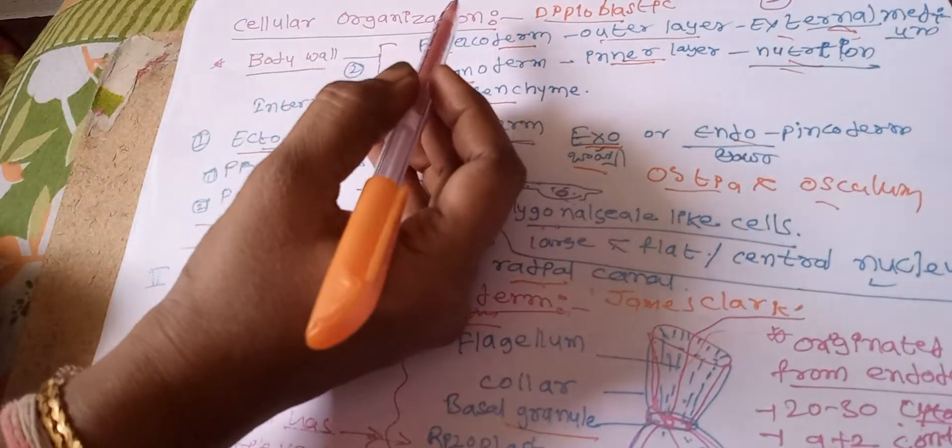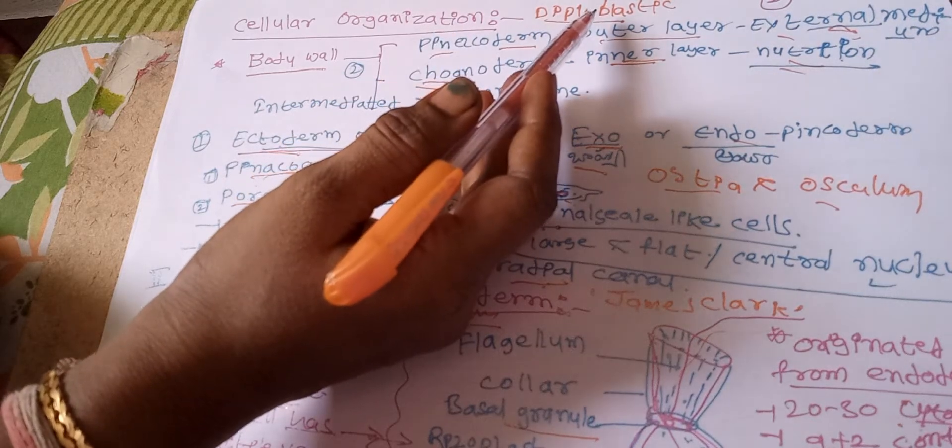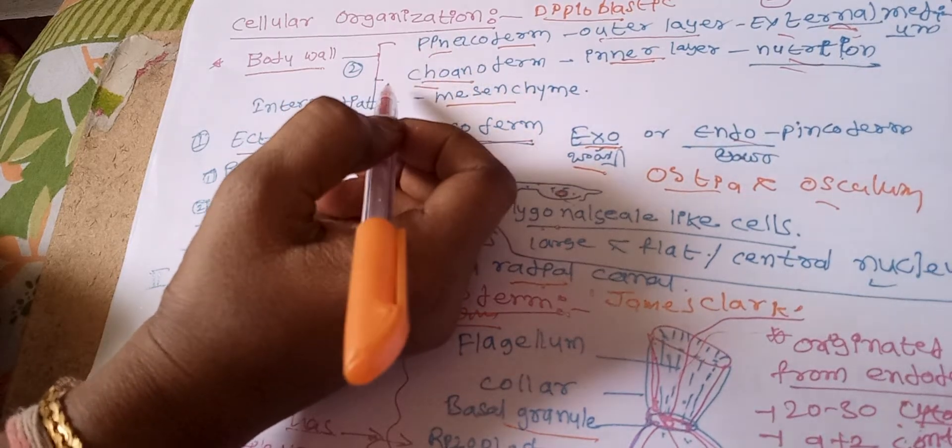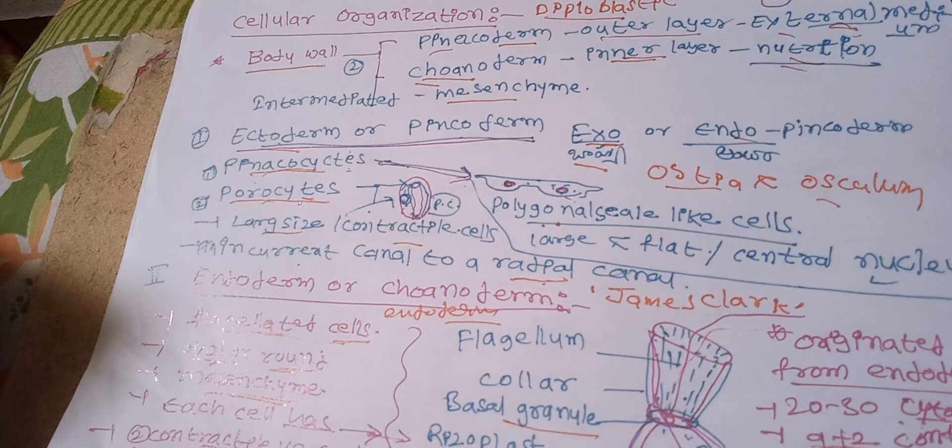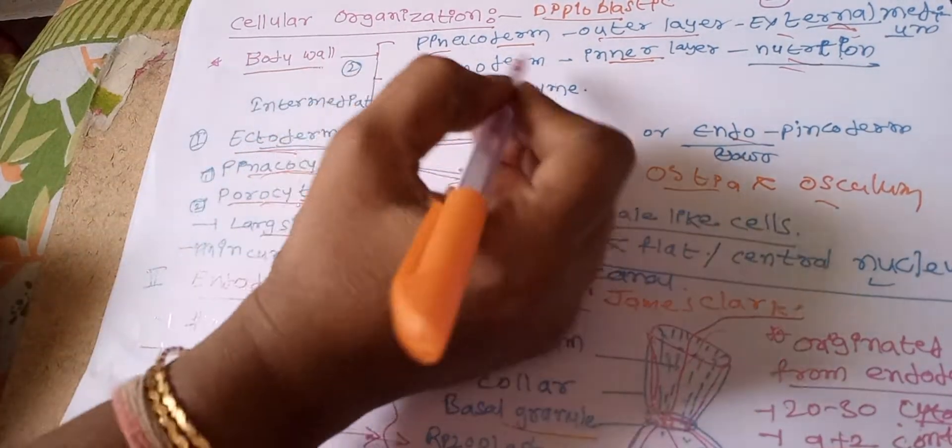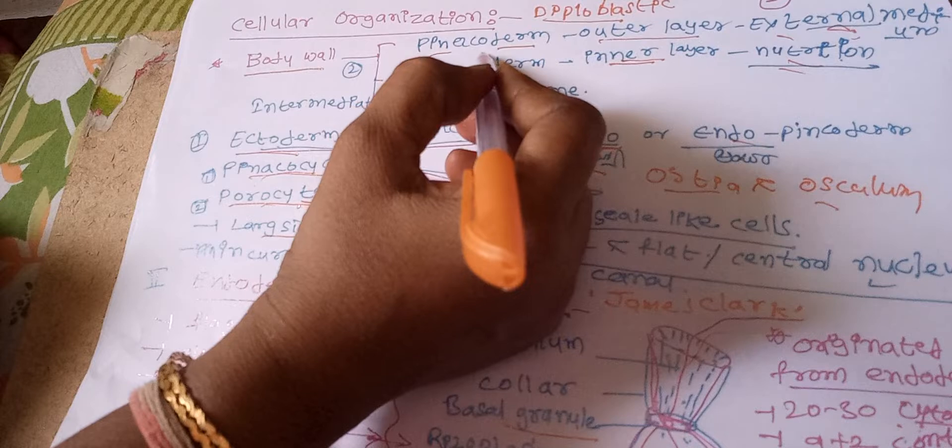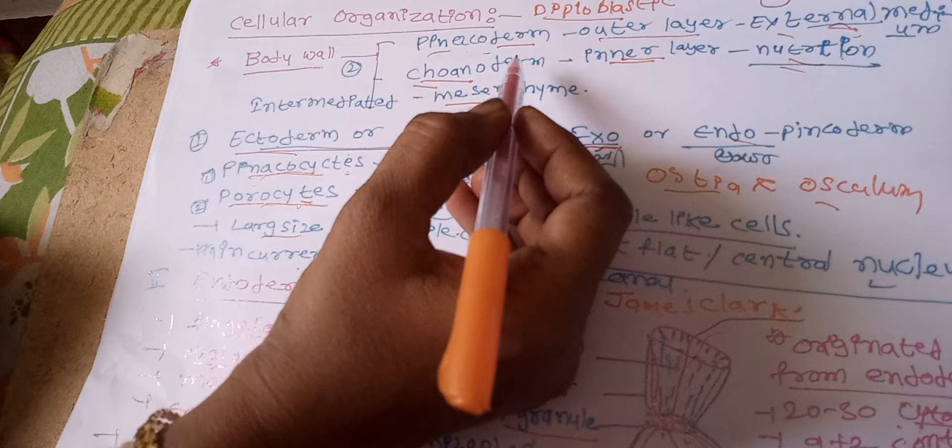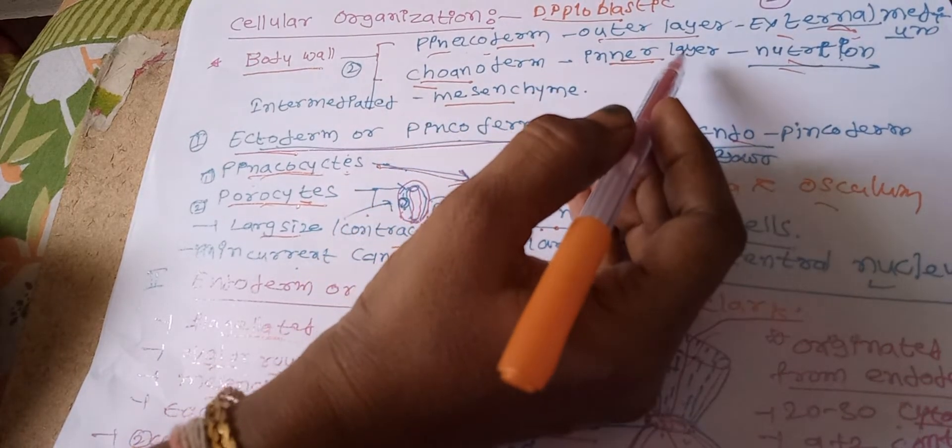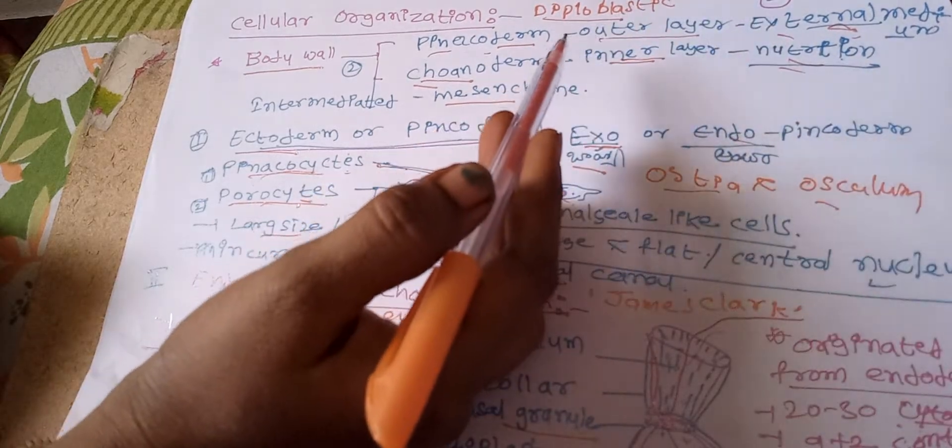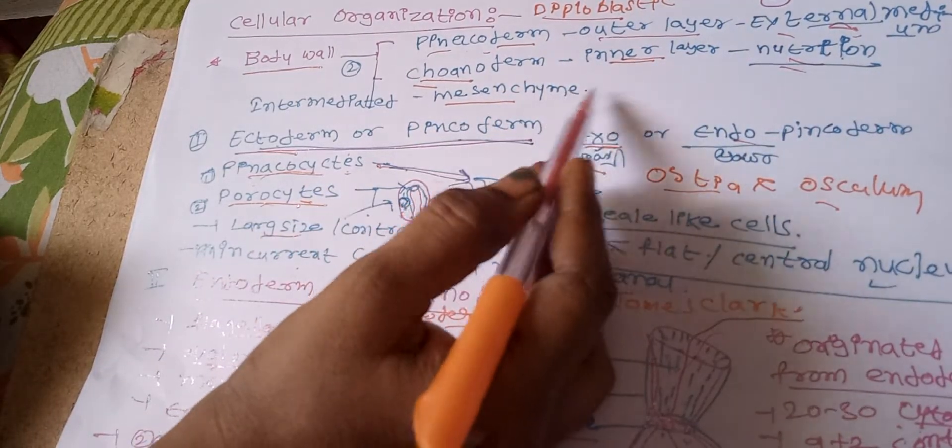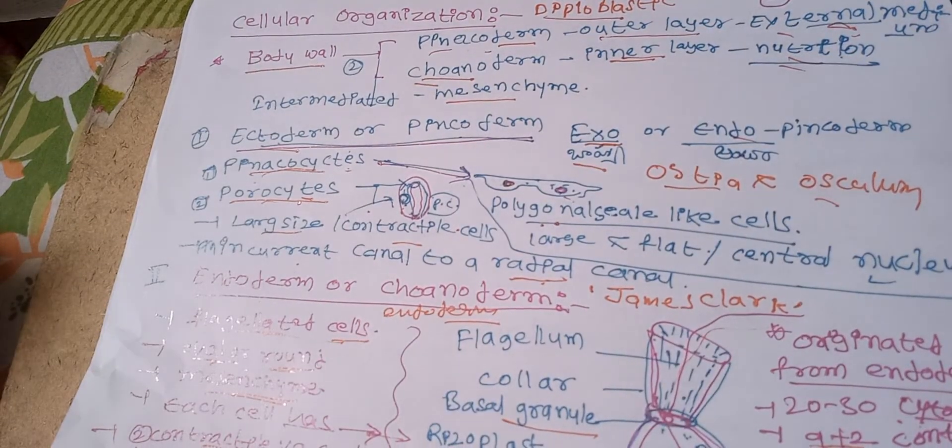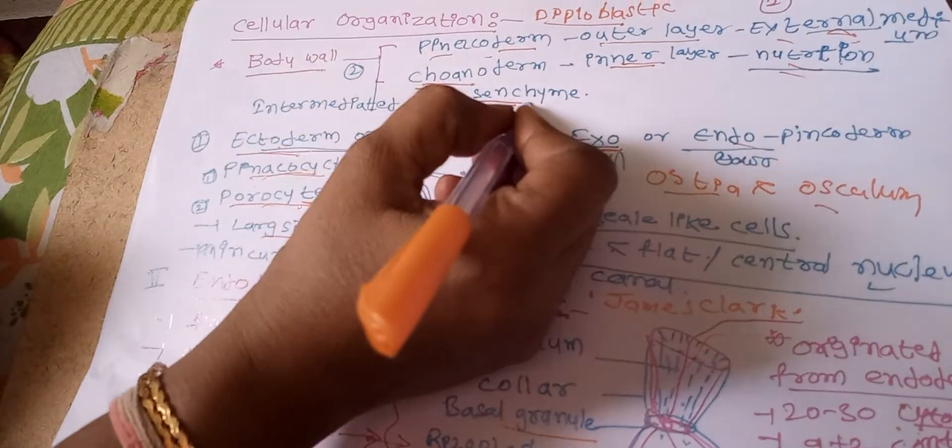Cellular organization: All sponges are diploblastic animals. Their body wall is composed of two layers: an outer layer and an inner layer. The outer layer is called pinacoderm, and inner layer is called choanoderm. The pinacoderm controls the interrelation between the mesenchyme and external medium, and choanoderm controls the nutrition of the spongocoel. The intermediate layer is called mesenchyme.